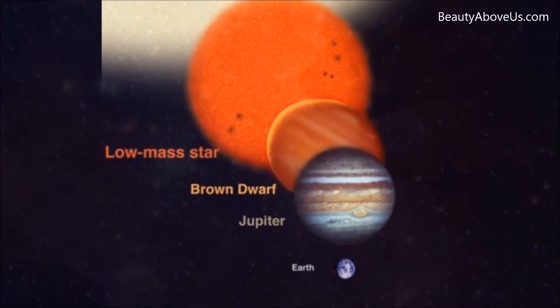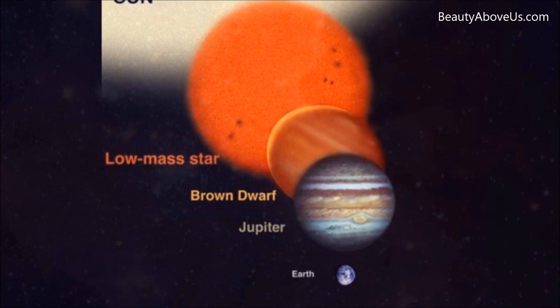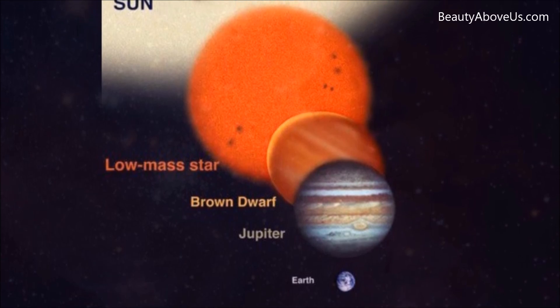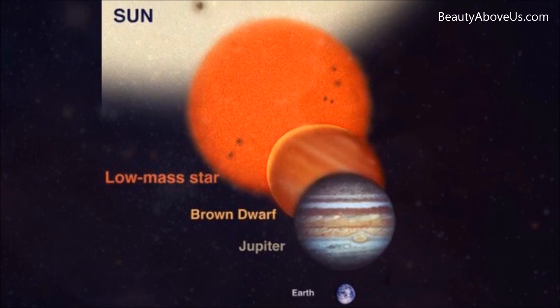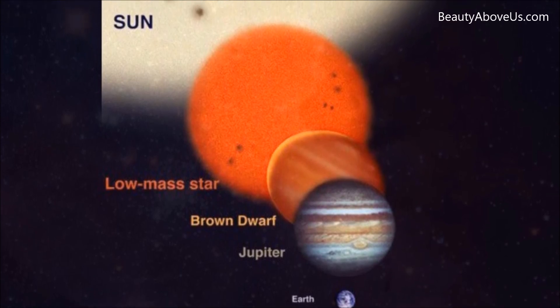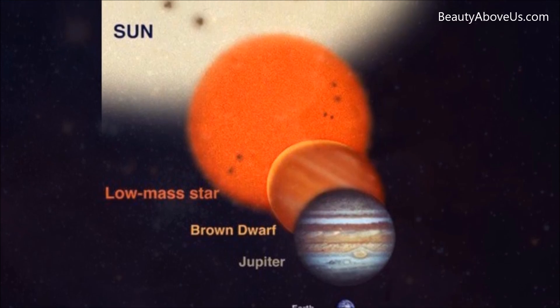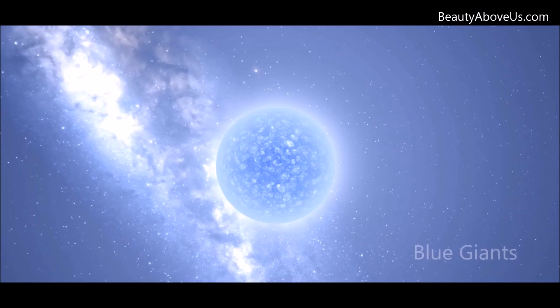Brown dwarfs constitute a midpoint between the smallest red dwarf stars and massive planets like Jupiter. They are the same size as Jupiter, but to qualify as a brown dwarf, they must be at least 13 times heavier.